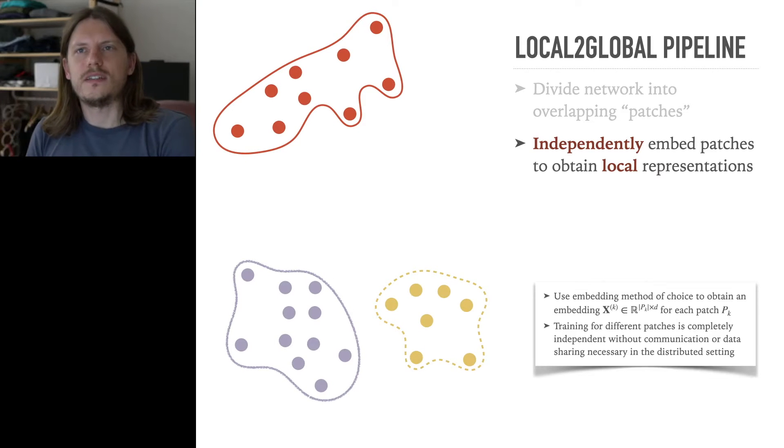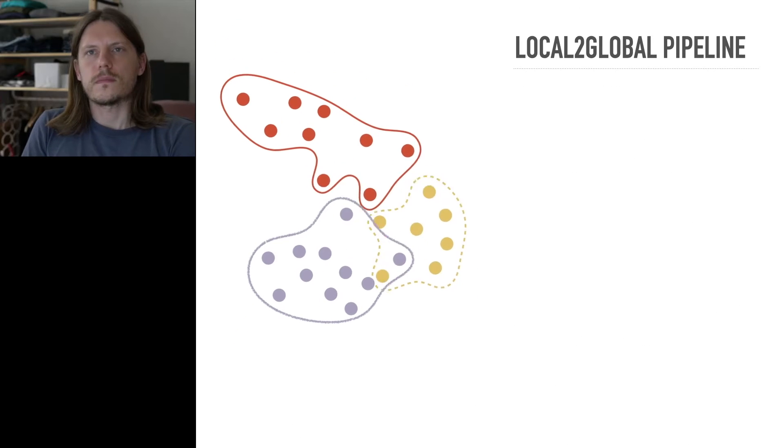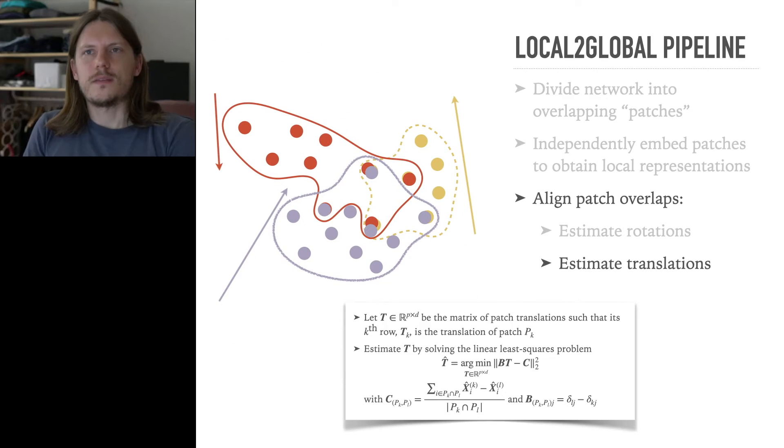Next, we independently train embeddings for each of the patches to obtain local representations. In the next step, we align the different patch embeddings. We first estimate the patch rotations using the eigenvector synchronization method over orthogonal transformations. Then we estimate the patch translations by solving a linear least-squares problem.